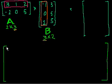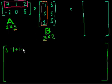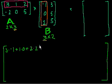So it's 3 times minus 1, plus 1 times 0, plus 2 times 2. That gives us the first term.